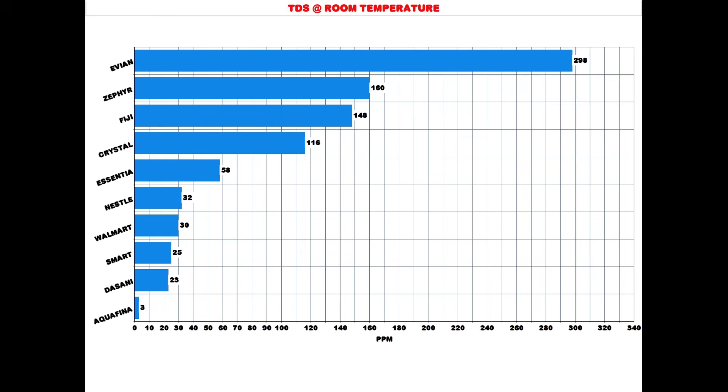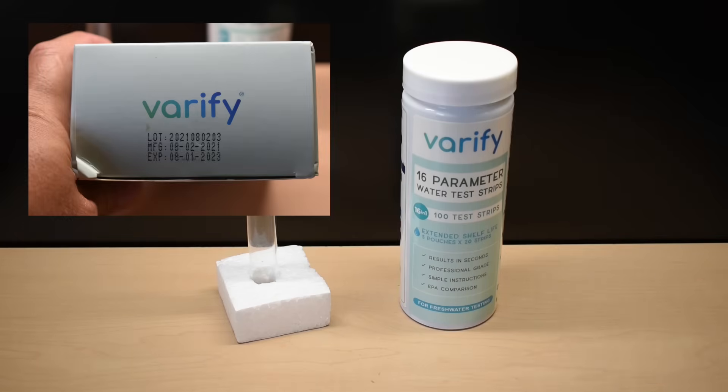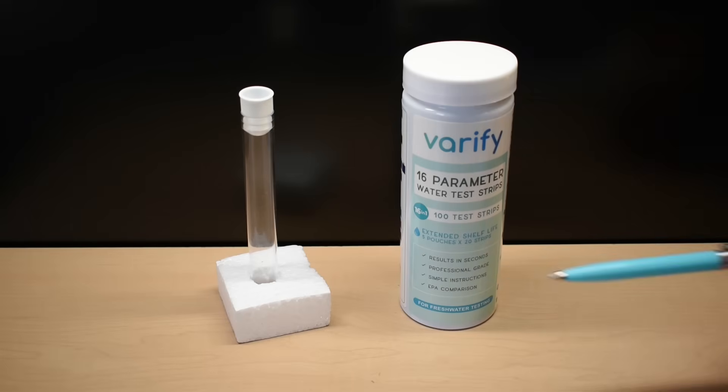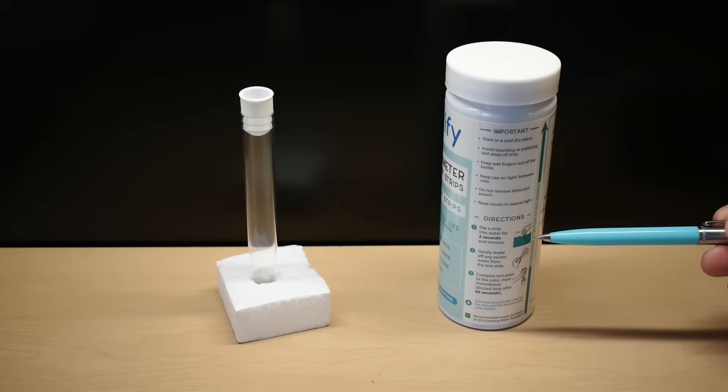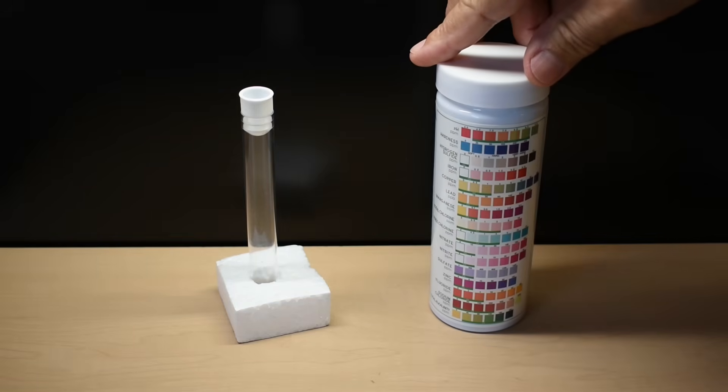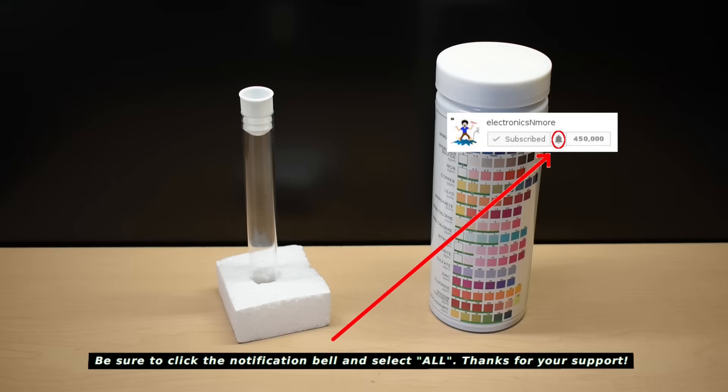In order to check the pH and everything else that's in the water, we're going to be using the 16 parameter water test strips. In case you're wondering, this is brand new, I just purchased it. Results in seconds, professional grade, simple instructions, EPA comparison. What I'll be doing is taking a test strip out of this tube for each water sample. I'm going to submerge the test strip into the water sample for 2 seconds, pull it out, shake off the excess, and then immediately compare the colors on the test strip to the colors on this container. To ensure fair testing for each one of the different brands, I'm going to hold the strip right next to the bottle and take a photograph under the exact same lighting at the exact same time.